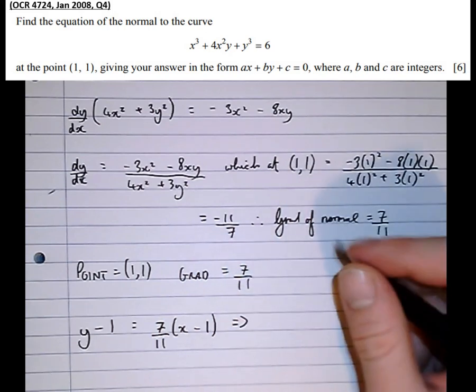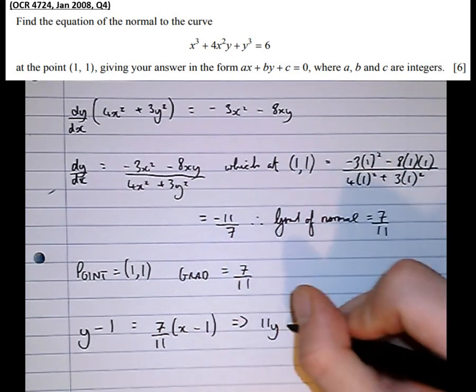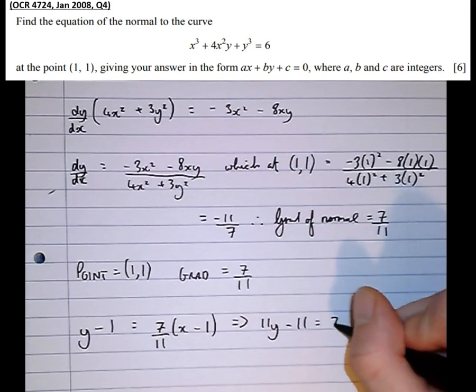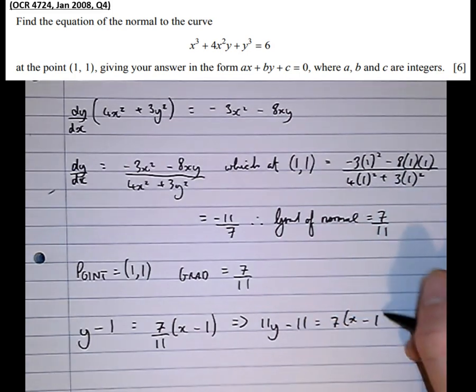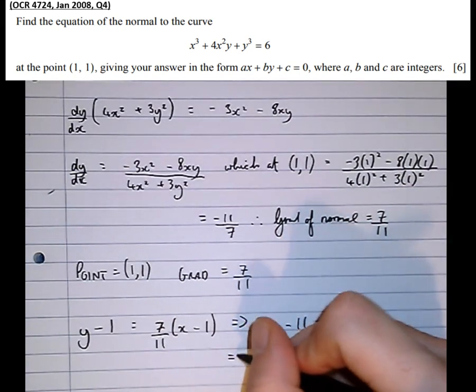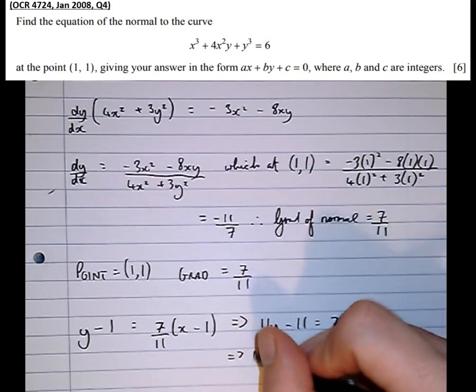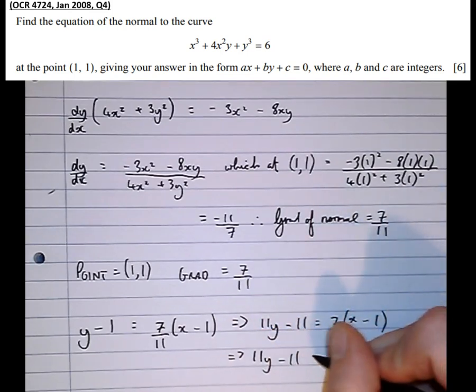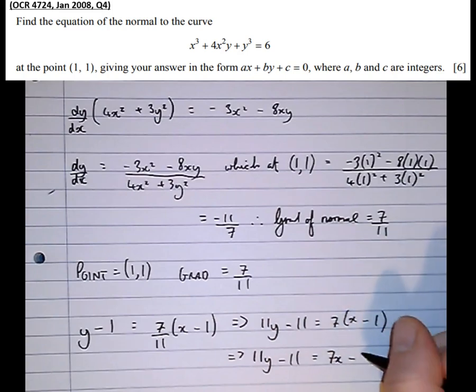Multiplying by 11, we get 11y - 11 equals 7x - 1. Which means that 11y - 11 equals 7x - 7.